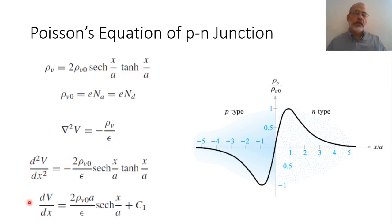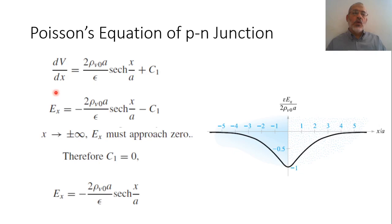By applying the first integration, we find dV/dx equals (2 * rho_V0 * A / epsilon) * sech(x/A) plus constant C1. Effectively, this is directly proportional to the electric field, because the electric field is minus grad V, and grad V is the partial derivative of V with respect to x. So the electric field in this case is this function but with a negative sign, since it is minus grad V. This gives us the electric field distribution as a function of x.